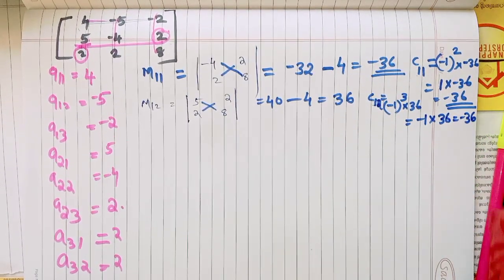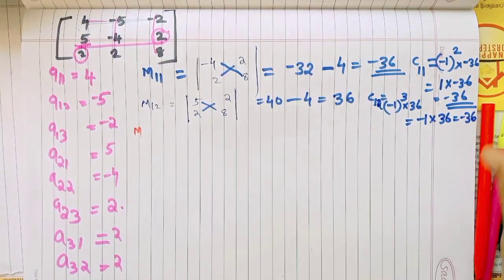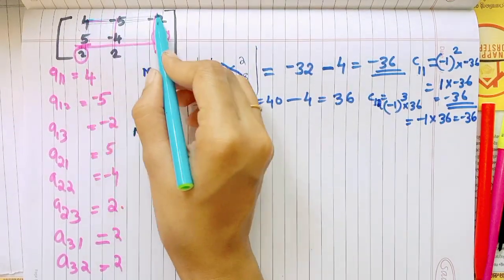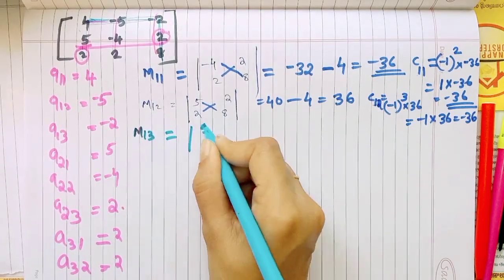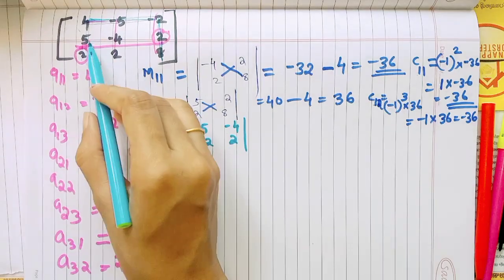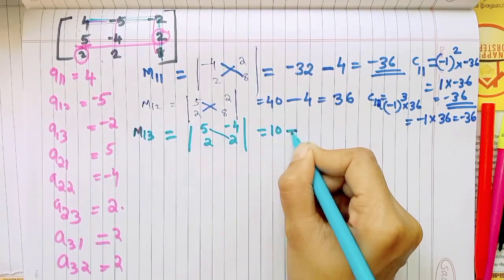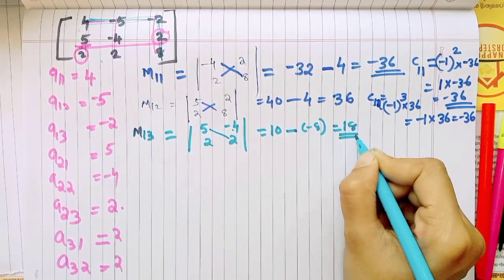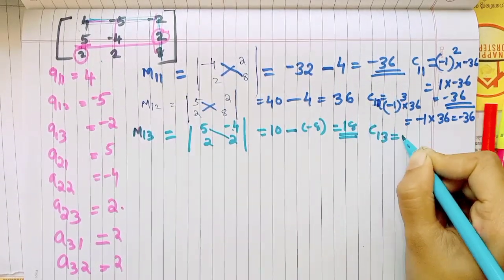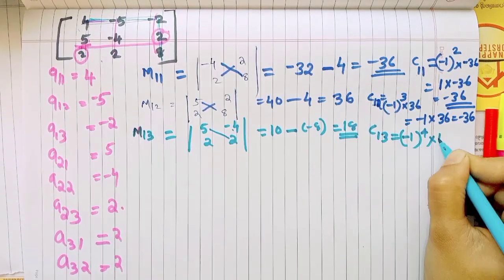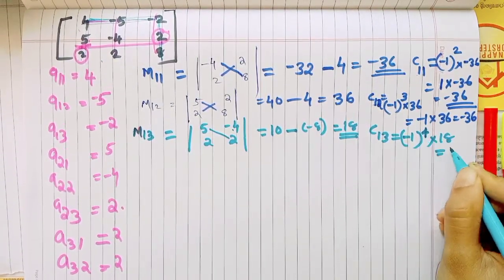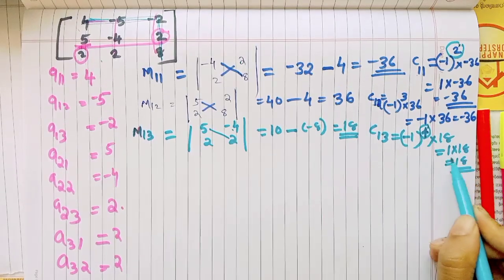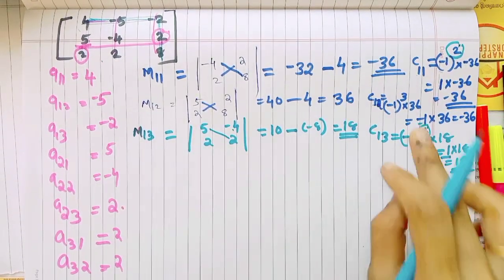The second element is A13. M13 is equal to — we cancel row and column, leaving 5, negative 4, 2, 2. So 5 into 2 is 10, minus 2 into negative 4 is negative 8, giving 10 plus 8 equals 18. Then C13: negative 1 raised to 1+3 is 4 — so C13 equals positive 18.